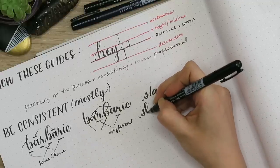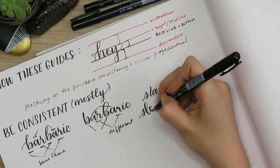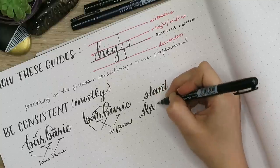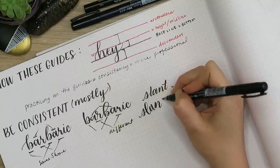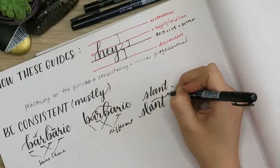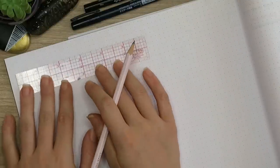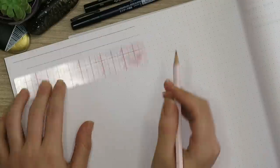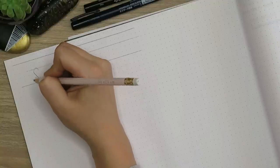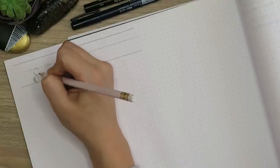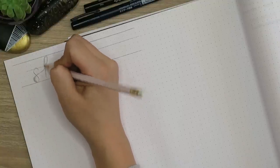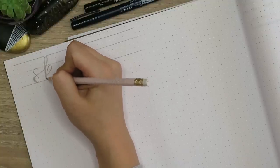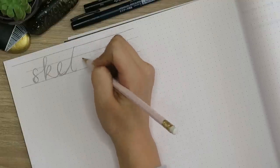But for the most part, we want to be consistent within our alphabets. You want to do the same thing with your slant. You want to keep the same slant when you're writing within your alphabet and usually within your composition piece too, unless it's the style that you're doing that calls for different slants. But like I said, it looks cleaner and more professional if you keep the same slant throughout your pieces and throughout your alphabet.